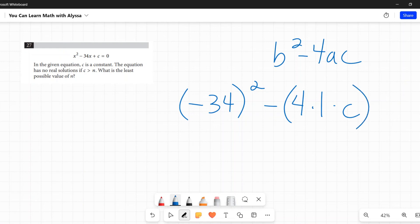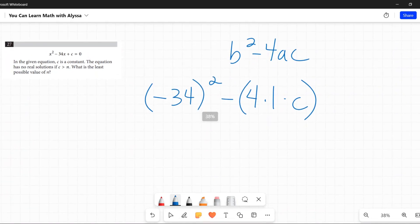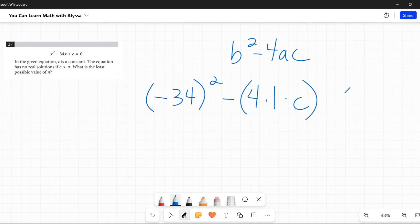So (-34)² - I'll look at my little sheet where I wrote this down earlier because I like doing mental math but I cannot multiply 34 by itself quickly in my head. So that is 1156, and then minus 4 times 1 times c, or 4c, is less than zero.